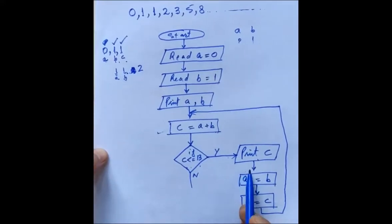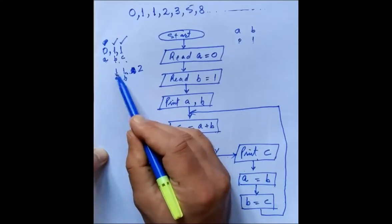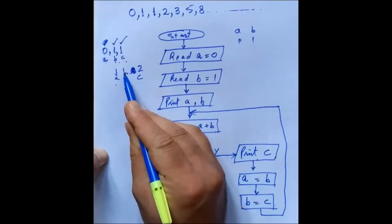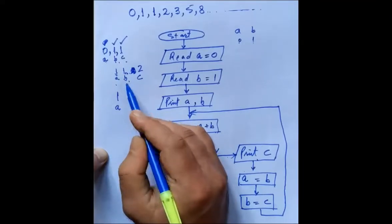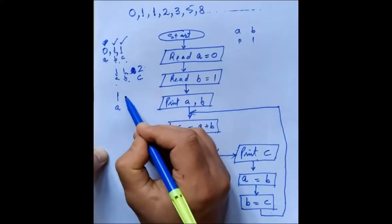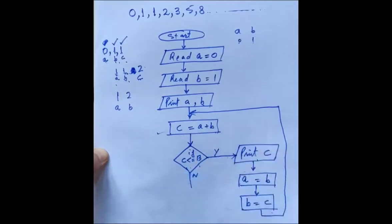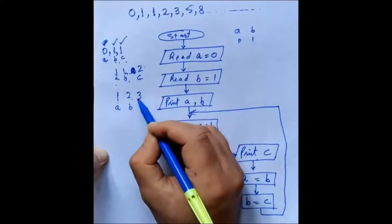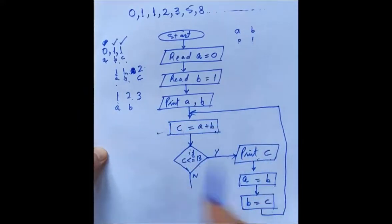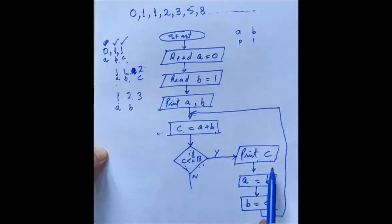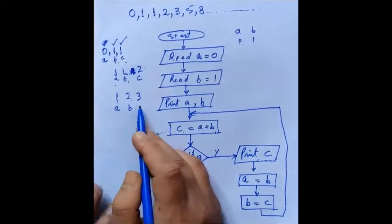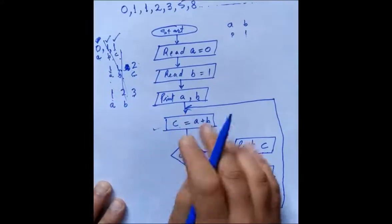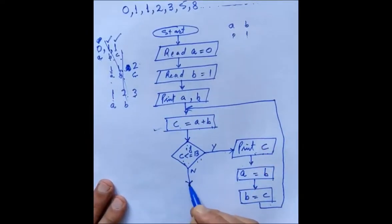Again a equals b: a was 1, b is 1, so a becomes 1. B equals c: b becomes 2. Then it goes back to c equals a plus b, giving 3. If c is less than or equal to 13 — yes — then print c, so 3 gets printed here. If the condition is no, it will stop.